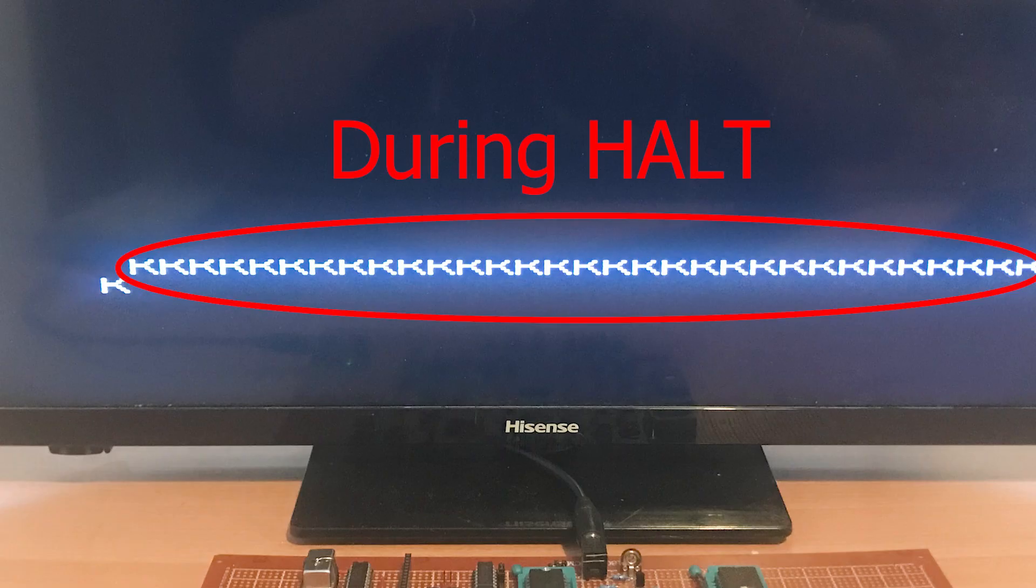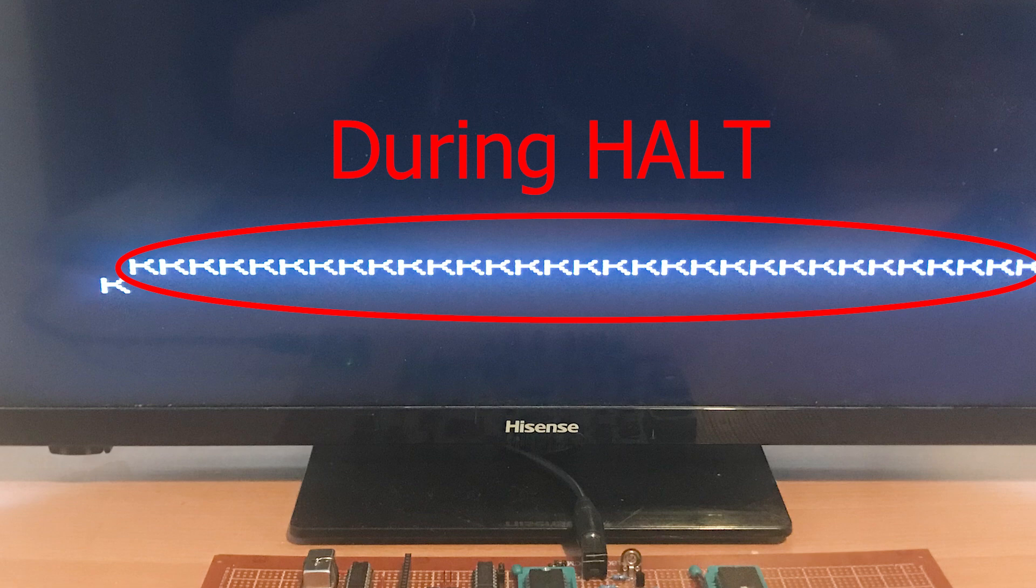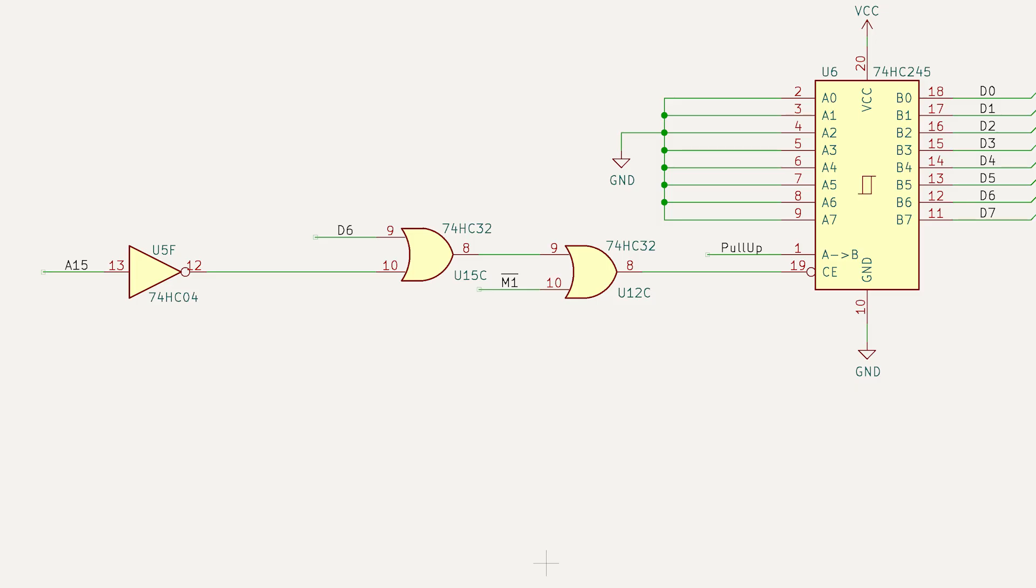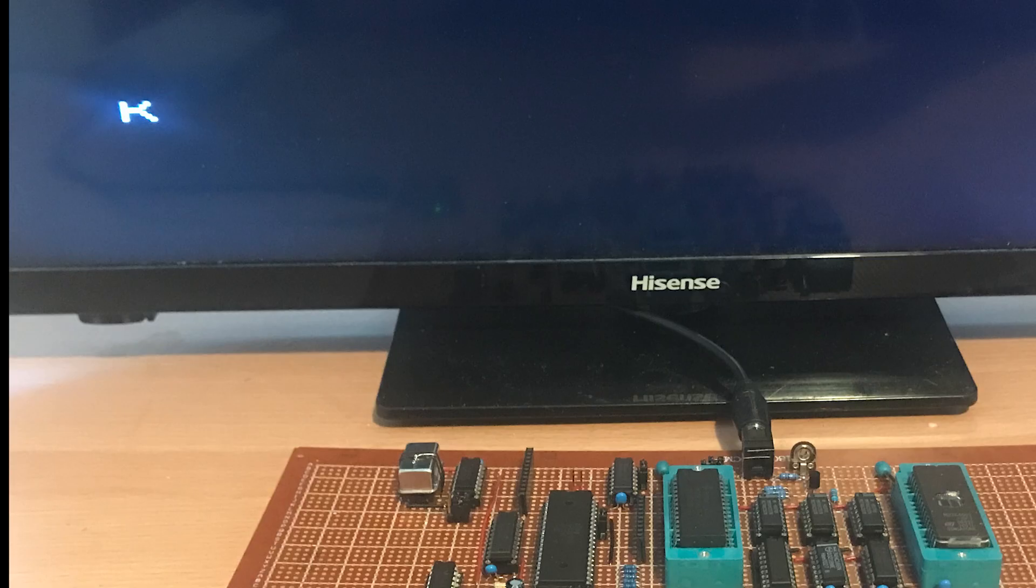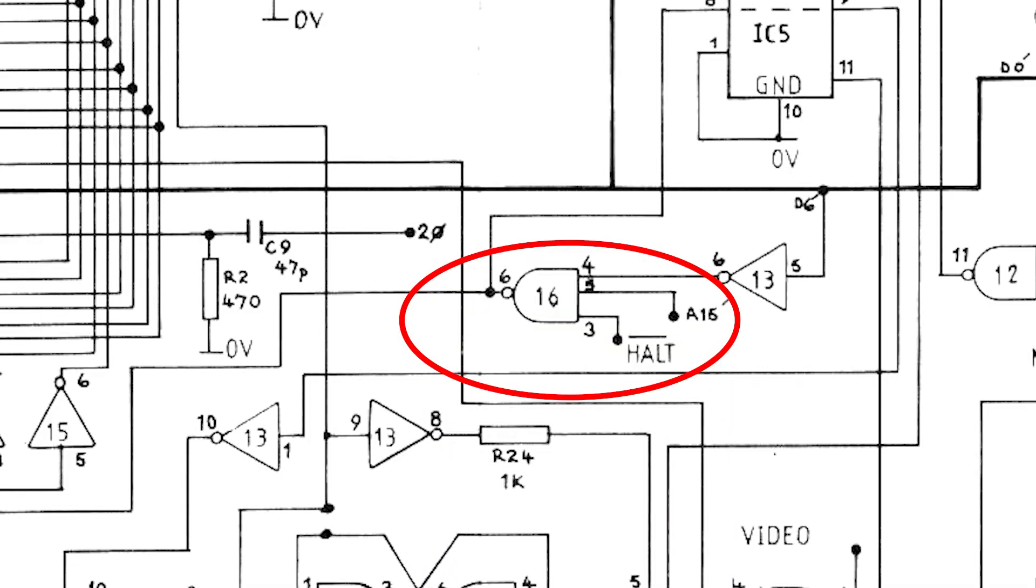So during this row of K's, the Z80 is continually fetching the data for this K on the next line. I add in HALT bar and it works fine. When I first looked at the original schematic diagram, I wondered why this HALT signal was connected. It wasn't completely obvious, but now I know.